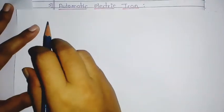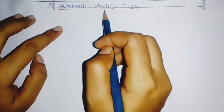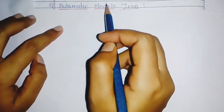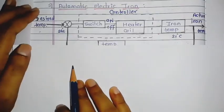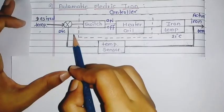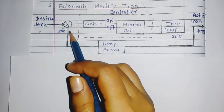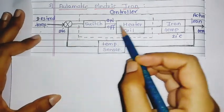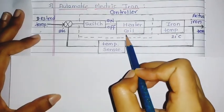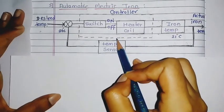The next example of a closed loop control system is the automatic electric iron, which is also used in our homes. The block diagram of this system is similar to the air conditioning system. The only change is that it uses a heater coil and iron temperature instead of the compressor coil.